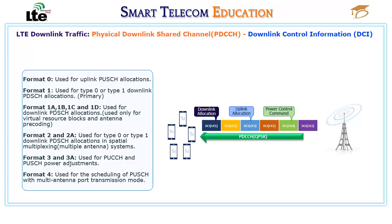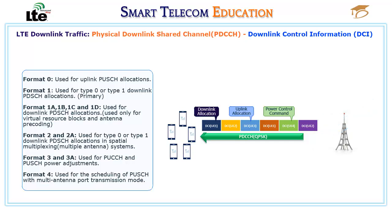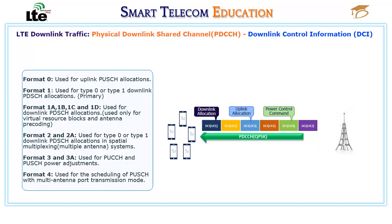Format 1A, 1B, 1C, and 1D are used for downlink PDSCH allocations, used only for virtual resource blocks and antenna precoding. Format 2 and 2A are used for type 0 or type 1 downlink PDSCH allocations in spatial multiplexing multiple antenna systems. Format 3 and 3A are used for PUCCH and PUSCH power adjustments.